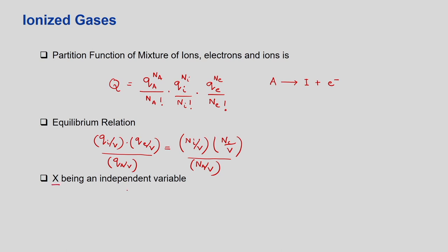Now define X as an independent variable (the conversion extent). NA = NA0 − X: at any instant, the number of atom A molecules is the initial number minus the amount reacted. The number of electrons produced is X, and the number of ions produced is also X. So: NA0 − X gives you X moles of ions and X moles of electrons respectively.